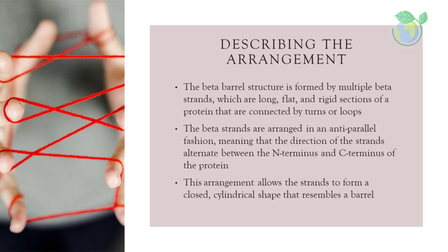The beta-barrel structure is formed by multiple beta strands, which are long, flat, and rigid sections of a protein that are connected by turns or loops. The beta strands are arranged in an anti-parallel fashion, meaning that the direction of the strands alternate between the N-terminus and C-terminus of the protein. This arrangement allows the strands to form a closed, cylindrical shape that resembles a barrel.